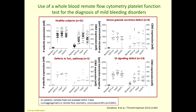One limitation of flow cytometry is that blood must be processed soon after collection. However, a fixing medium has recently been developed that allows studying platelets even a few days after blood collection. This has been adopted to assess whether remote platelet function testing is feasible — where samples can be collected, stimulated, fixed, and analyzed in a centralized laboratory remote from blood collection. A study showed that using selected agonists and two markers — P-selectin and CD63 expression — platelet function disorders can be diagnosed this way.